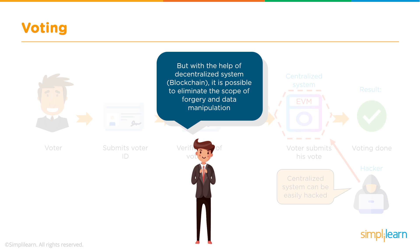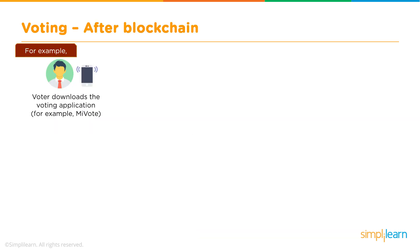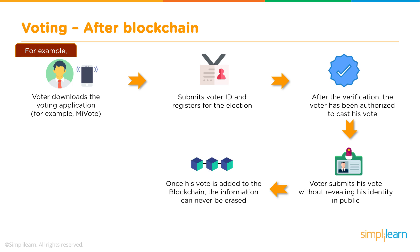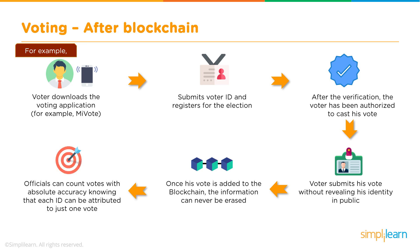With a decentralized system like blockchain, it is possible to completely eliminate any scope of forgery and data manipulation. Here's how voting works with blockchain: the voter downloads a voting application, submits a voter ID, and registers for the election. After verification, the voter is authorized to cast their vote without revealing their identity to the public. Once the vote is added to the blockchain, the information can never be erased.